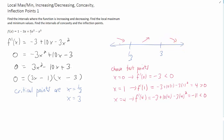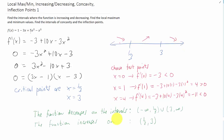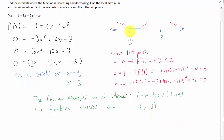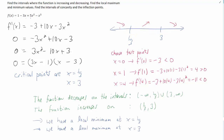Let's summarize what we have so far. Our function decreases on the interval negative infinity to one third, and then decreases again on the interval three to infinity, and our function increases from one third to three. This tells us that we must have a local minimum at x equals one third, and we must have a local maximum at x equals three. That's pretty good so far — we've answered the first couple of questions.